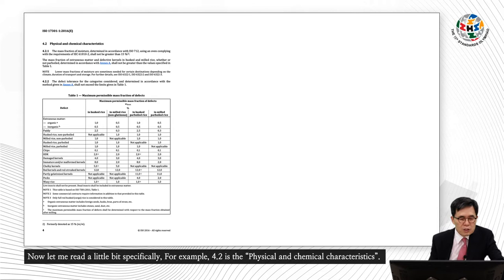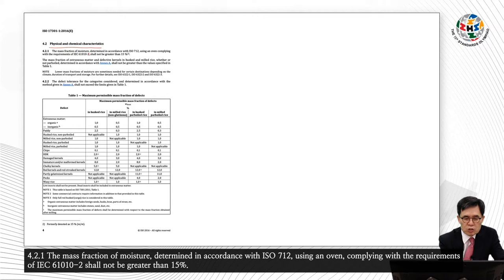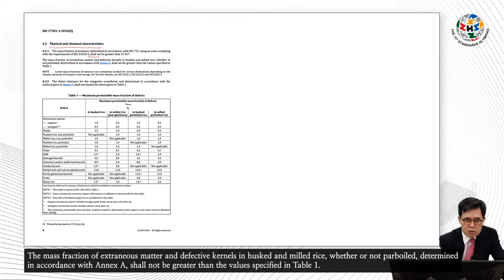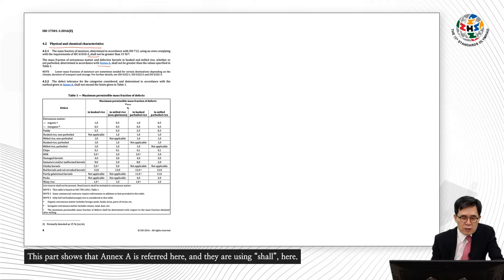Let me give a specific example. Clause 4.2 is the physical and chemical characteristics. Clause 4.2.1: the mass fraction of moisture determined in accordance with ISO 712, using an oven complying with the requirements of IEC 61010-2, shall not be greater than 50%. And the mass fraction of extraneous matter and defective kernels in husked and milled rice, whether or not parboiled, determined in accordance with Annex A, shall not be greater than the values specified in Table 1.